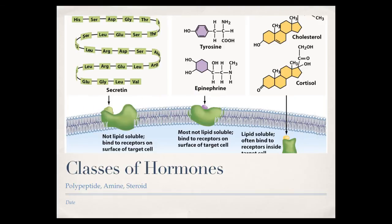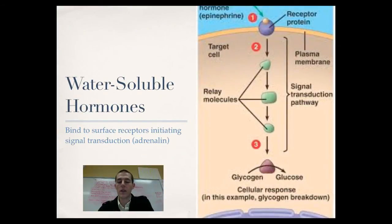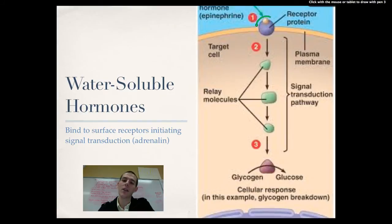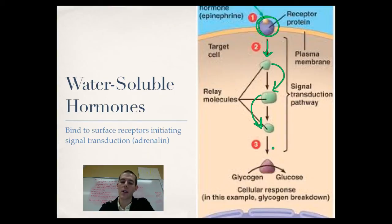I just wanted to give you a quick overview before we got to specifics. Water-soluble hormones — amines and peptide hormones — are able to dissolve in water but not in lipids. The way they get their work done is through signal transduction pathways. The hormone travels around in body fluids, finds its target cell, and binds to a specific receptor. That receptor sets off a signal transduction pathway — a series of molecules that relay a message from one to the next — eventually reaching a target molecule that leads to some sort of response within the cell.